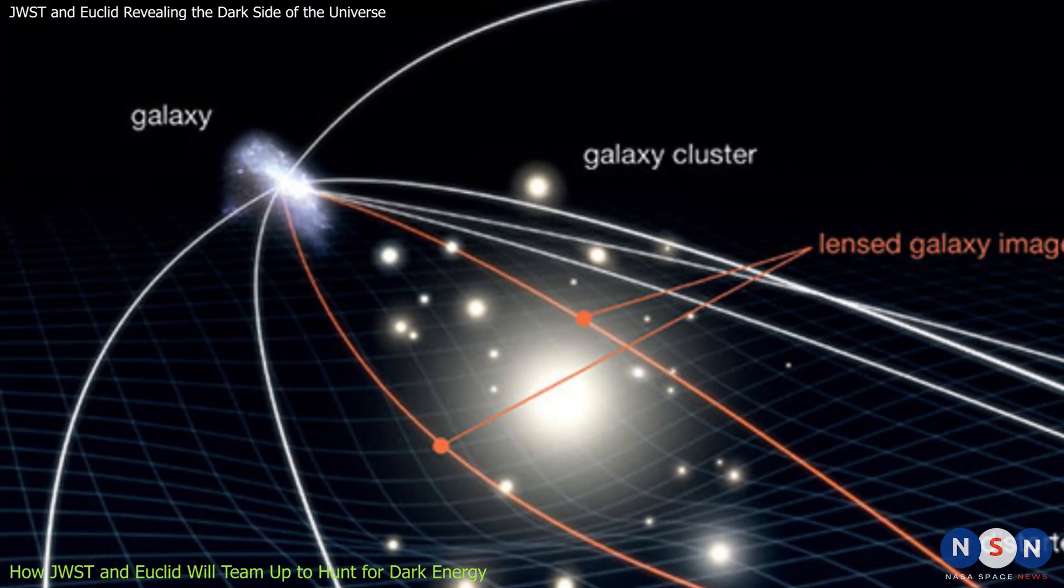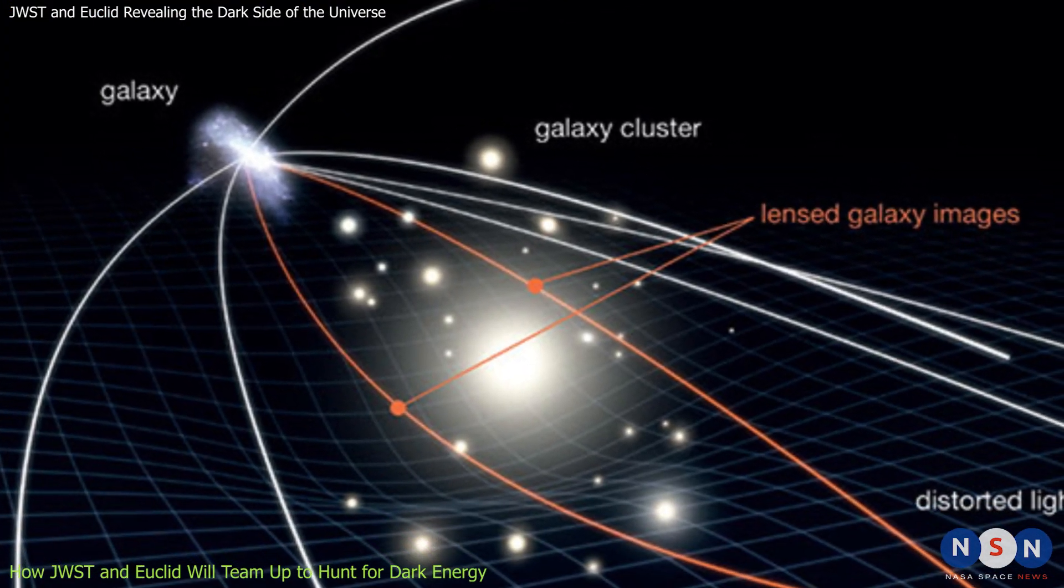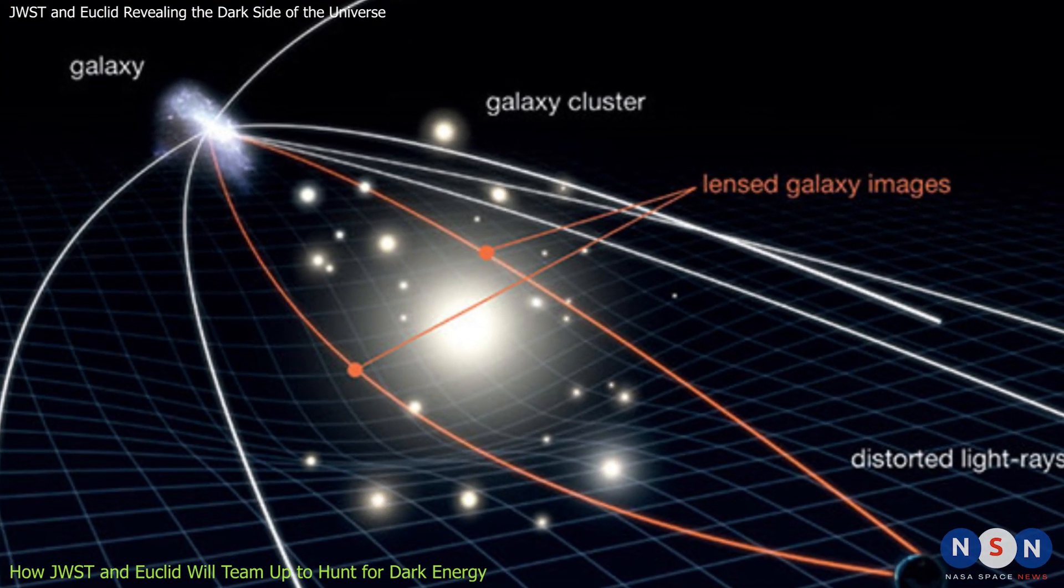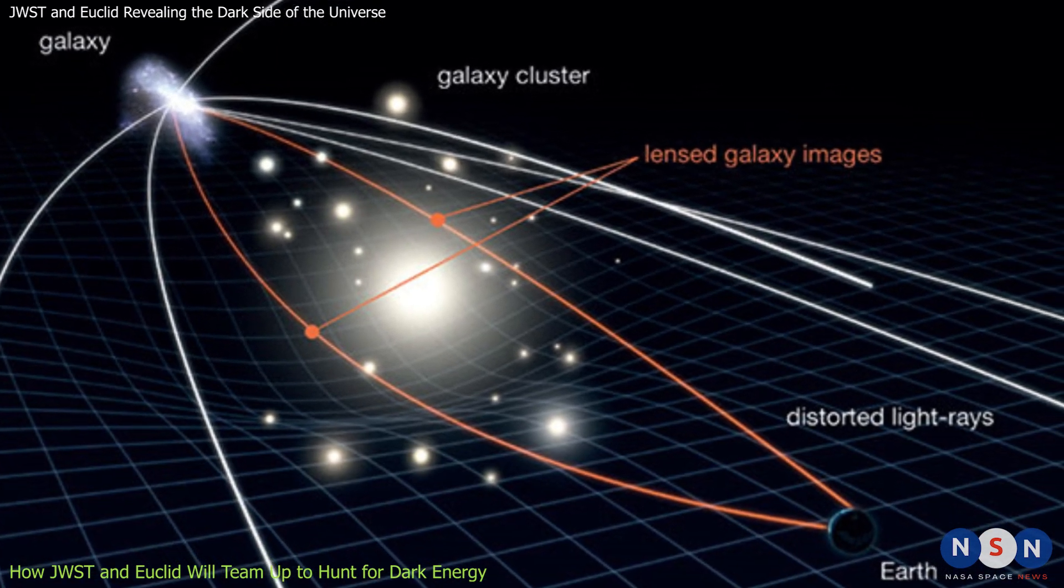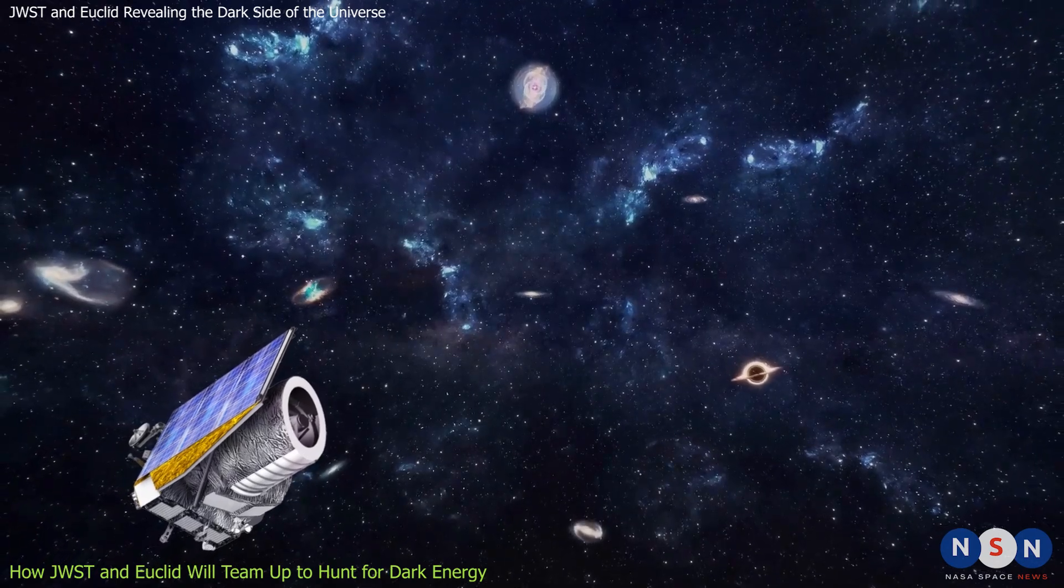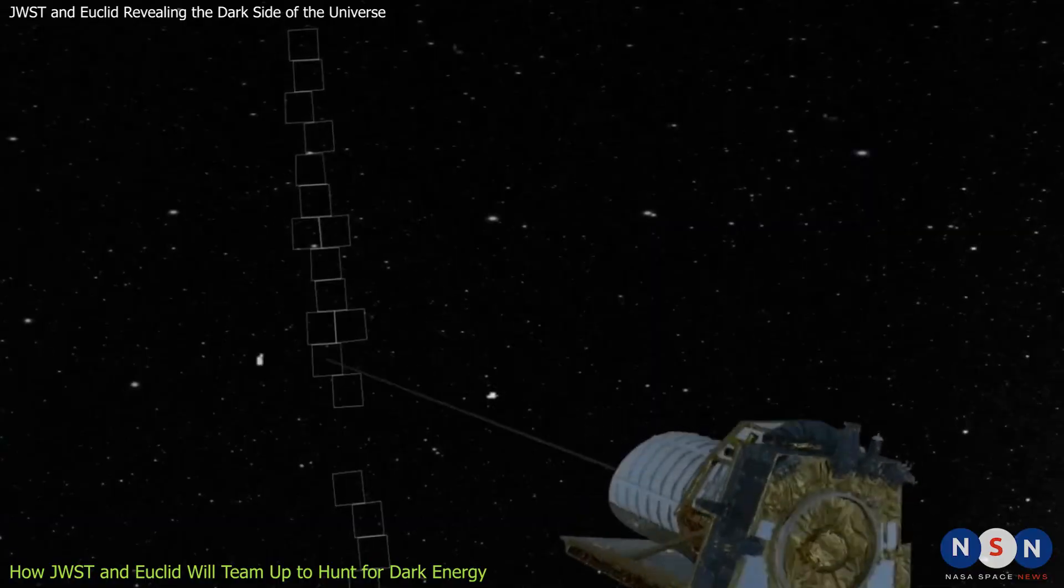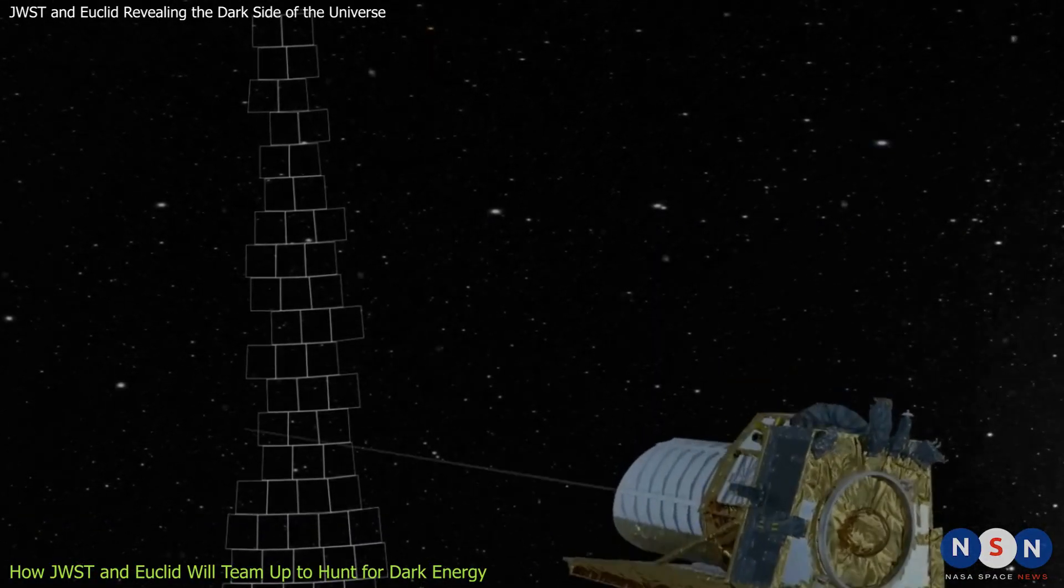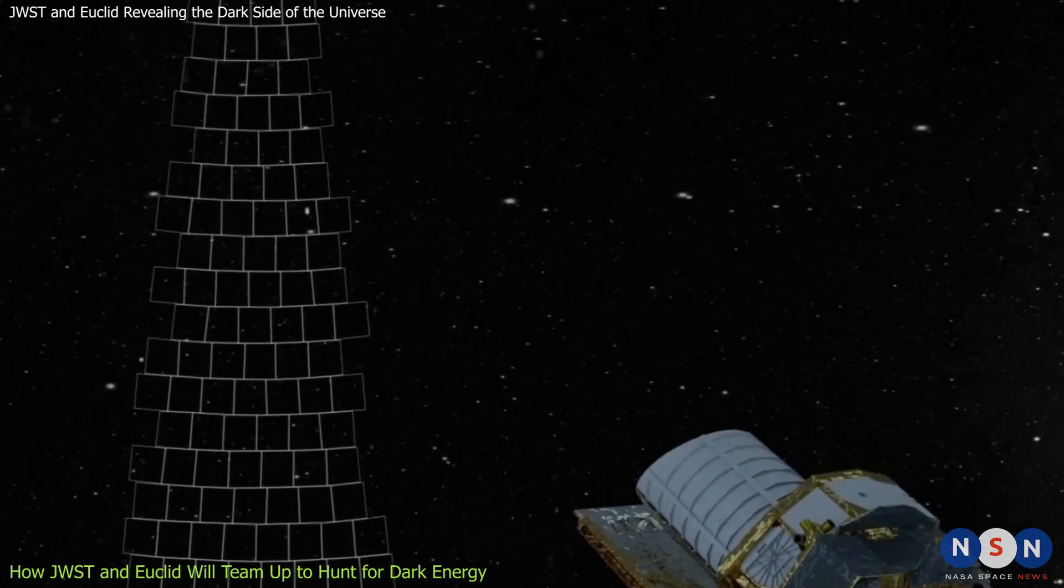Weak gravitational lensing is a phenomenon that occurs when light from distant galaxies is distorted by the gravity of the intervening matter, both visible and dark. By measuring the shapes and orientations of these galaxies, Euclid will be able to map the distribution of dark matter in the universe and how it changes over time.